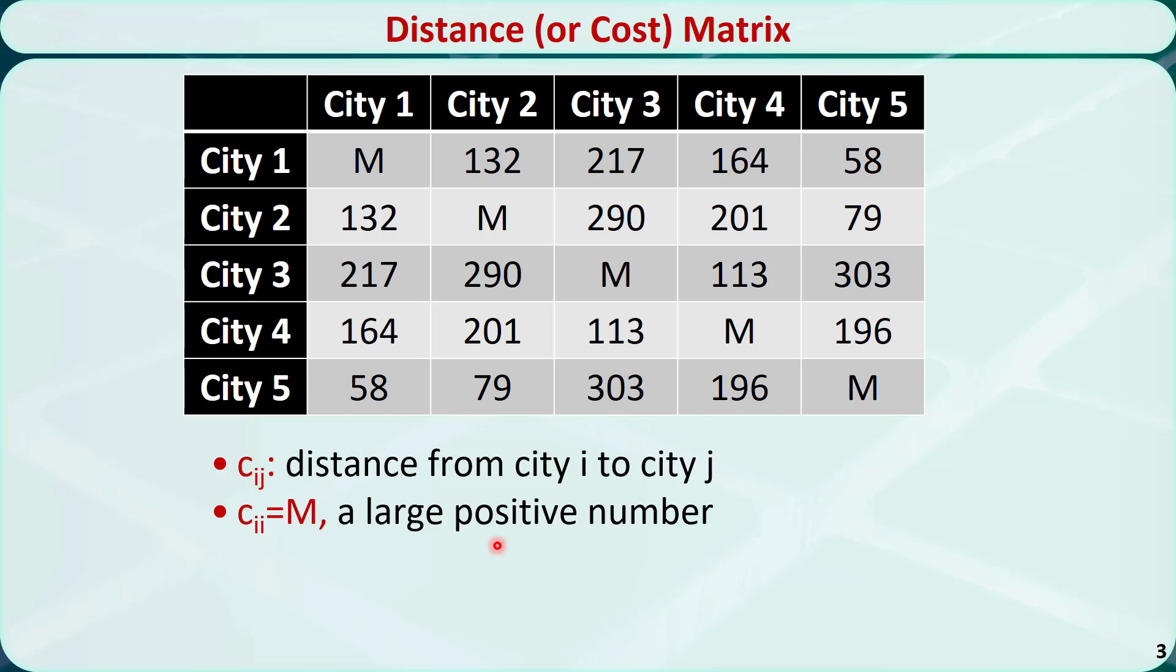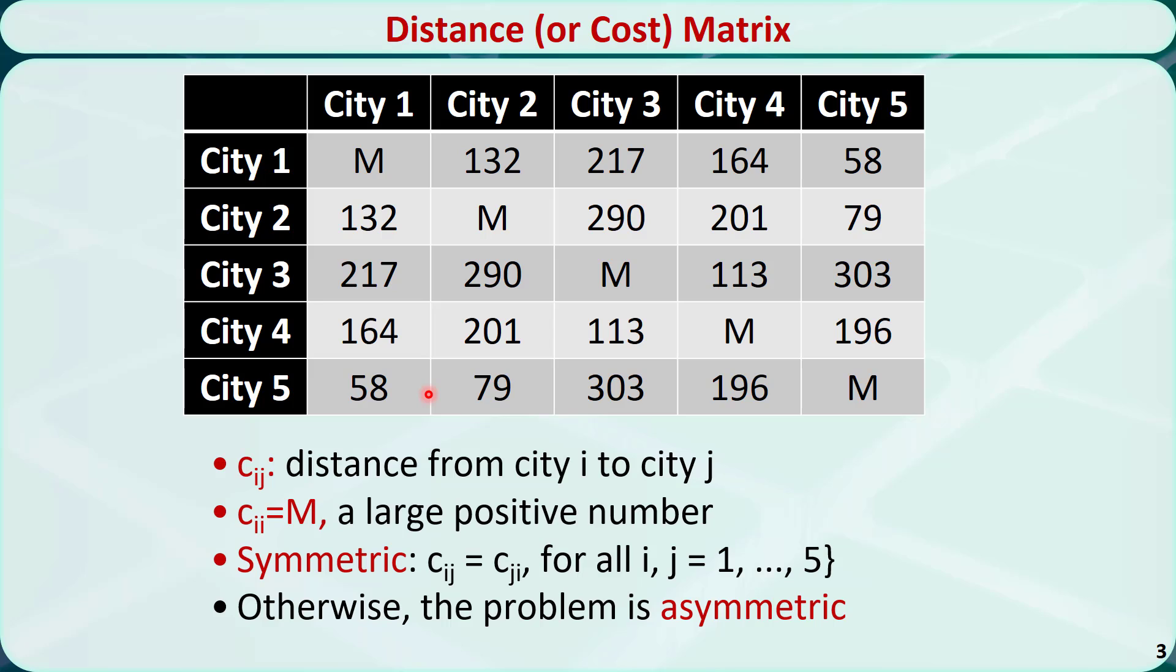The distance matrix is also called the cost matrix sometimes, and the elements represent the relevant traveling cost from one city to another.